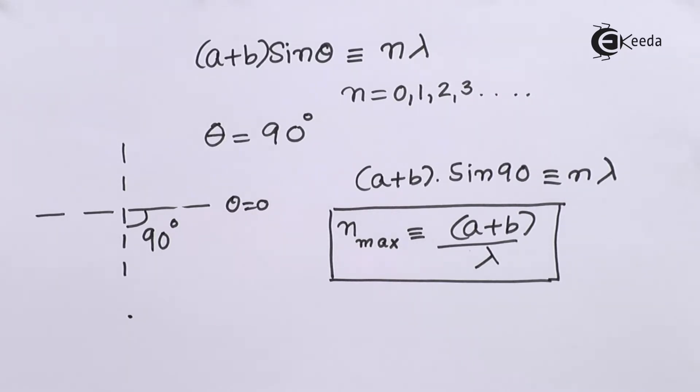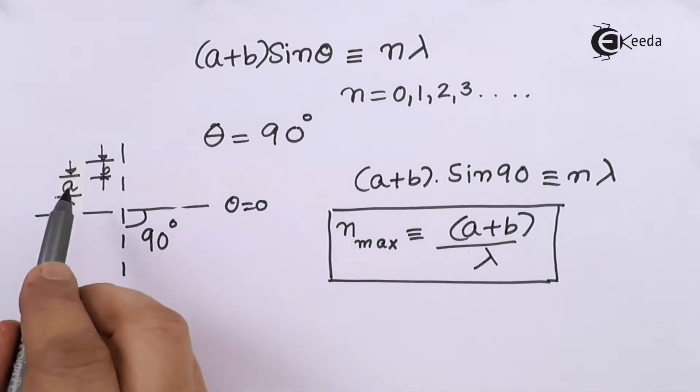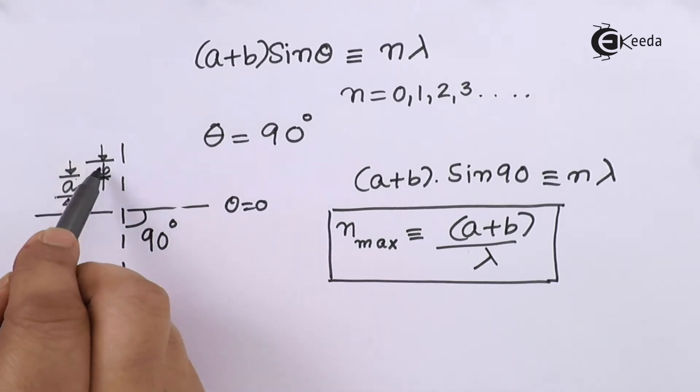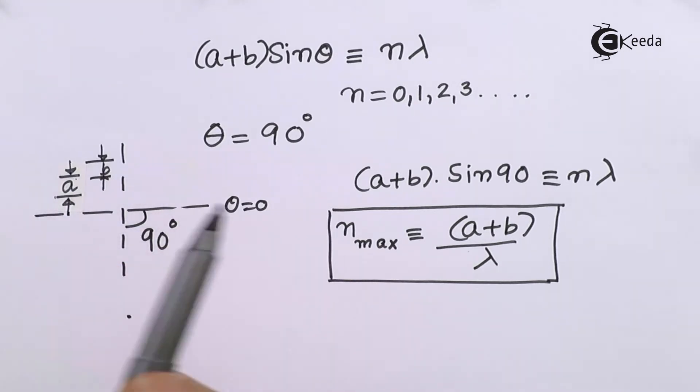And what is the grating element in this case? The grating element normally we say it is 1 upon a plus b. So 1 upon a plus b is actually the grating element. This is the distance between the opaque part over here and this is the distance between the transparent part of the grating.